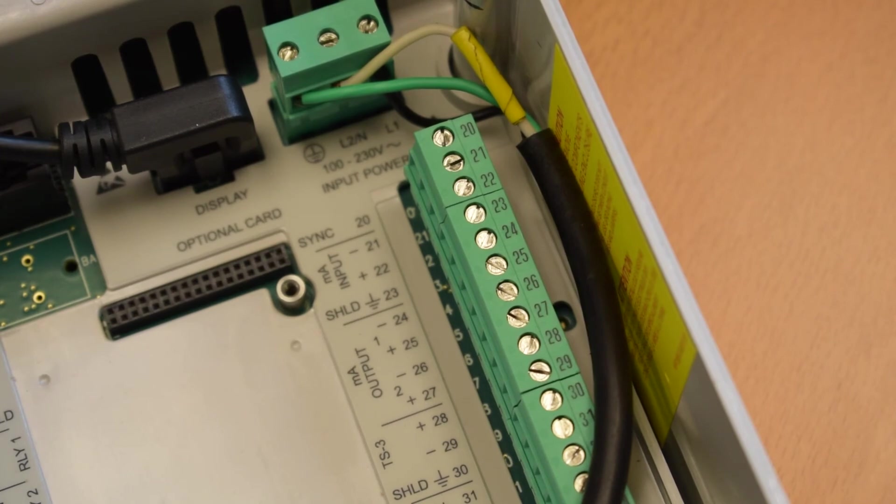To the right underneath the power wires is the terminal strip for the analog wiring. Analog output 1 uses terminals 24 and 25. Analog output 2 uses terminals 26 and 27.